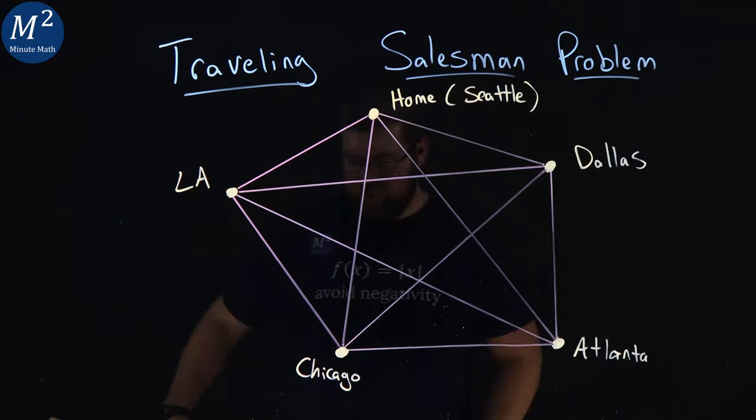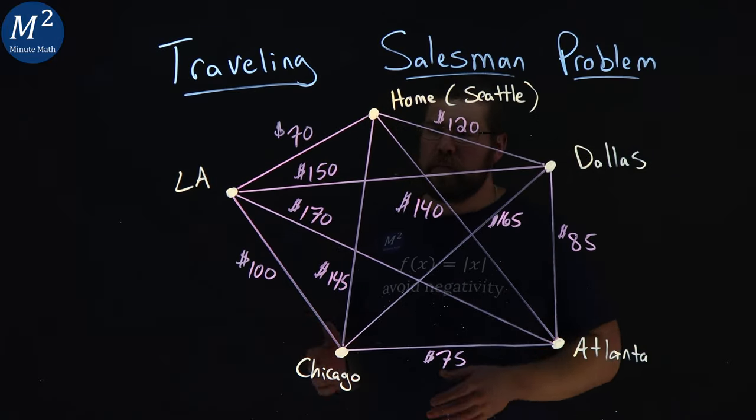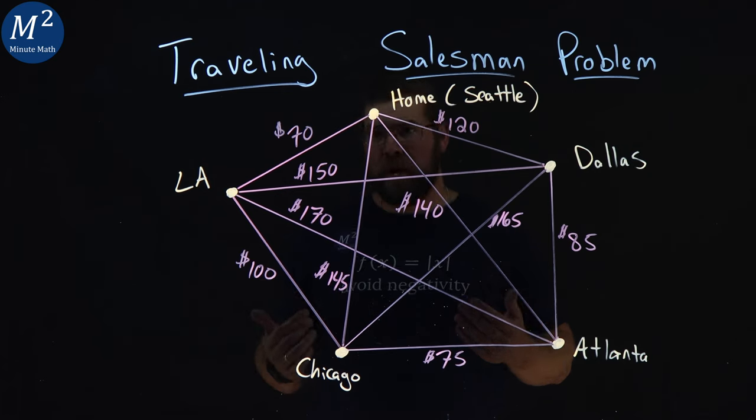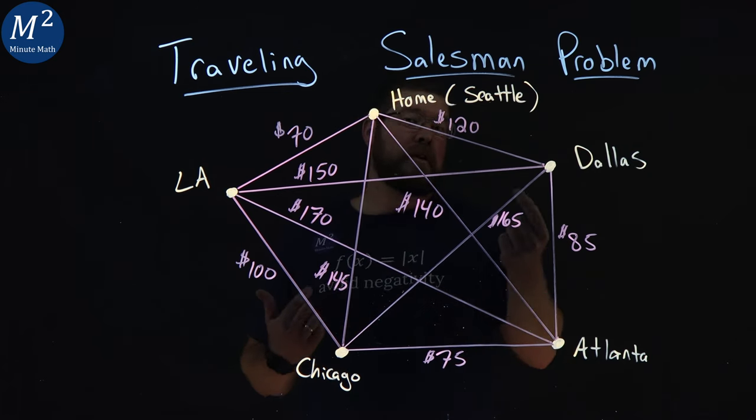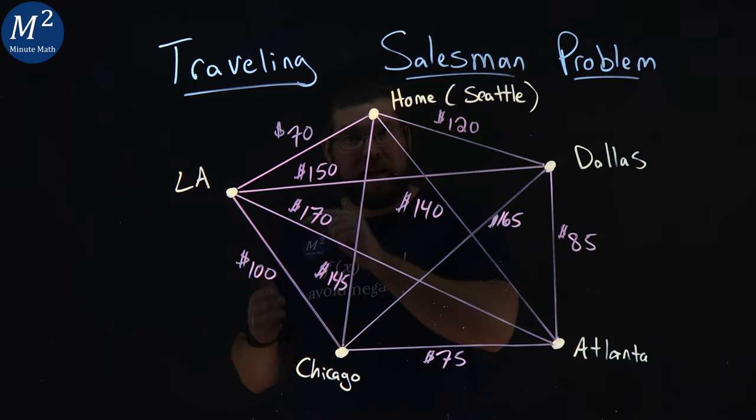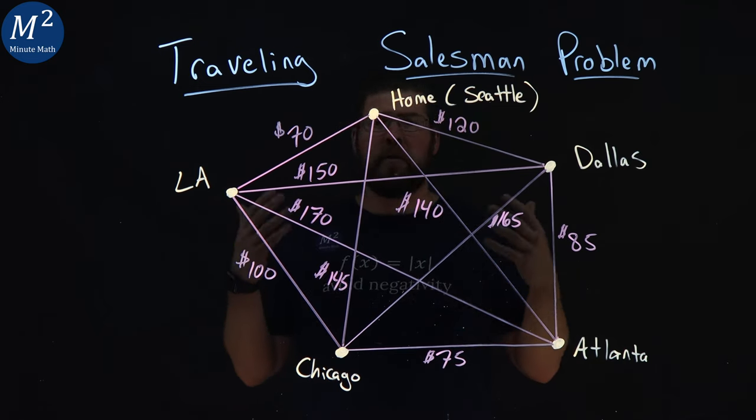Let's learn about the traveling salesman problem. This problem is a Hamiltonian circuit, which means we start at one vertex,